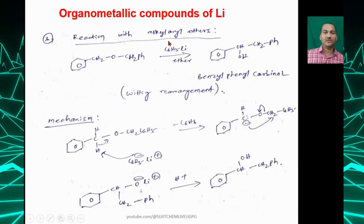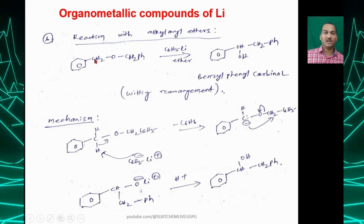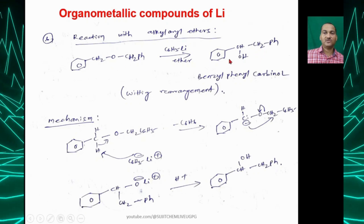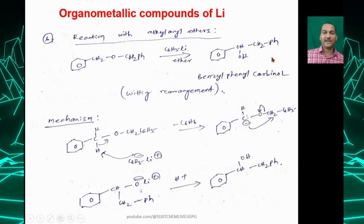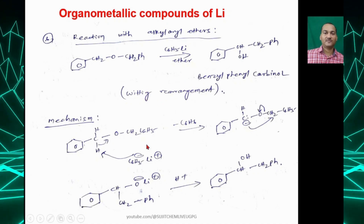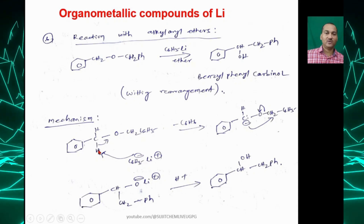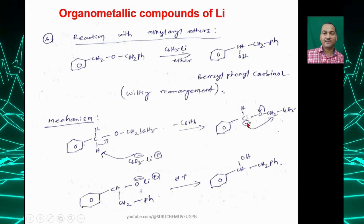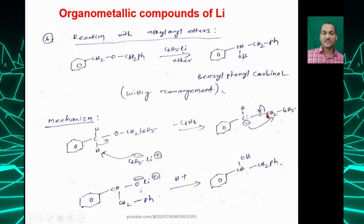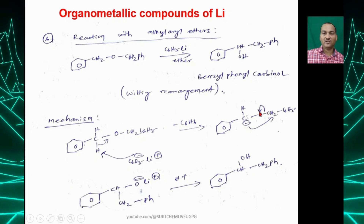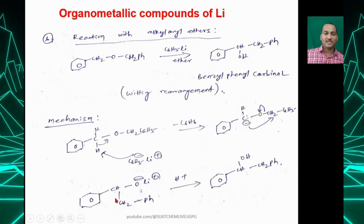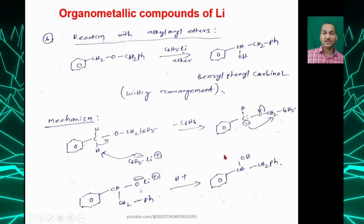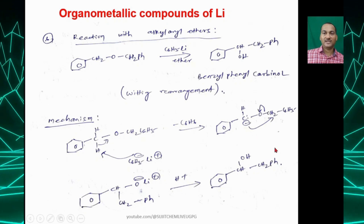The reaction with alkyl ethers: phenyl lithium can react with alkyl benzyl ethers giving a benzyl phenyl carbinol — this is known as the Wittig rearrangement. Ph⁻ removes a proton, generating a carbanion; this carbanion attacks the CH₂ and the C-O bond breaks on oxygen, giving a lithiated intermediate. Upon hydrolysis you get the benzyl phenyl carbinol.